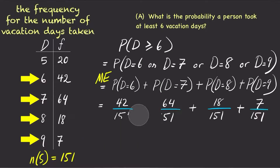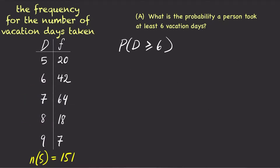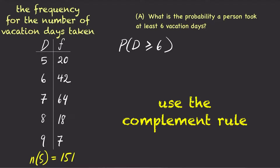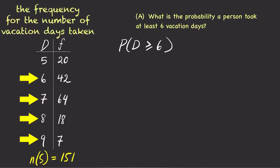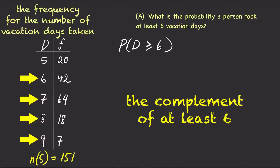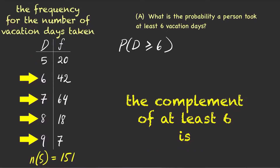Instead of doing this problem directly, we could also calculate p of d greater than or equal to 6 by using the complement rule. Remember that greater than or equal to 6 means d could be 6, 7, 8, or 9. So the complement of taking at least 6 vacation days is taking less than 6 vacation days. By the complement rule, p of d greater than or equal to 6 is 1 minus p of d equals 5.